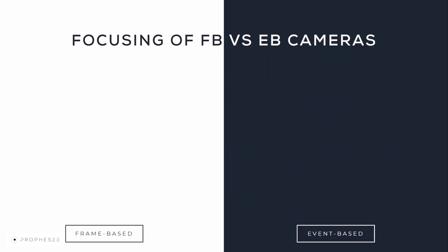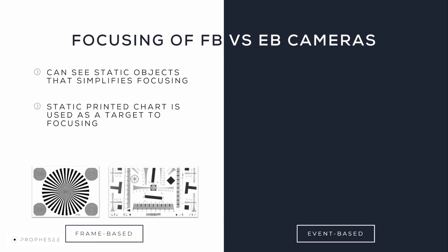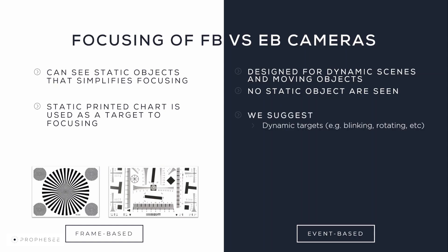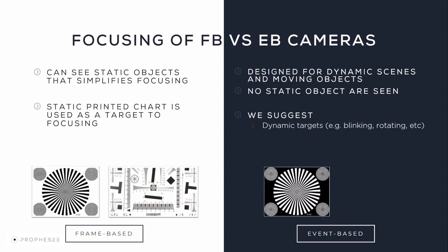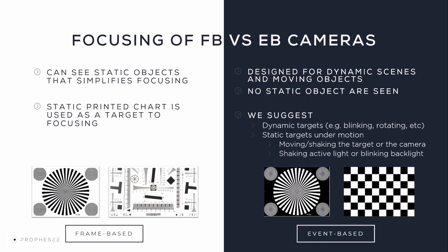There is a difference between focusing event-based cameras and frame-based cameras. Frame-based cameras can see static objects, which simplifies the focus adjustment — often a static printed chart is used as a target. Event-based cameras are designed for dynamic scenes and moving objects, where no static object can be seen. Therefore, we use dynamic targets, for example a blinking pattern like a star or a chessboard, or static targets under motion, by either moving and shaking the target or the camera, or using some form of active light.